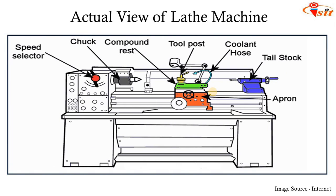Now we are going to see some pictures of the lathe. This is the actual view of the lathe — you can see the coolant hose. Whatever heat is generated during the machining operations can hamper the cutting capacity of the tool, causing the tool to wear out or not perform proper machining, and it will also affect the surface finish of the work piece. To overcome this and lower the temperature, we use coolant, which can lower the heat to some extent.